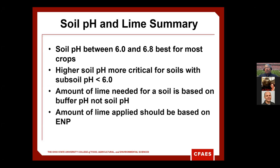Summary on soil pH and lime: crops do best between pH 6.0 and 6.8. In northwestern Ohio we can approach 6.0 before needing lime. Higher soil pH maintenance is more critical for soils with subsoil pH less than 6 — primarily eastern Ohio. Amount of lime needed is based on buffer pH, not soil pH, and all lime applied should be based on ENP. If your lime source is from Indiana or Michigan and you don't see ENP on the analysis, ask the dealer — if they're legally selling lime in Ohio, they must have ENP listed in pounds, not percent.